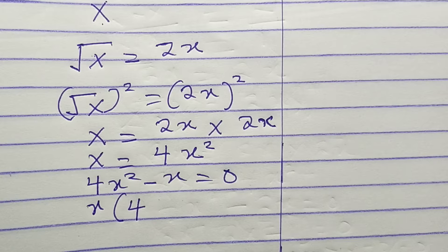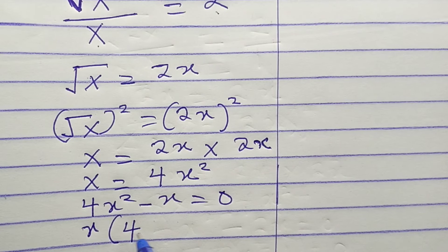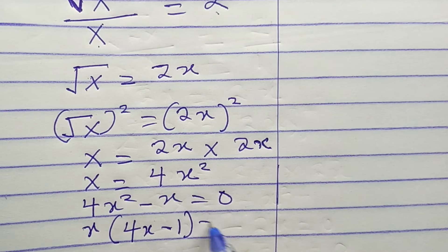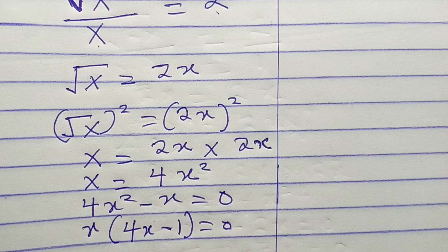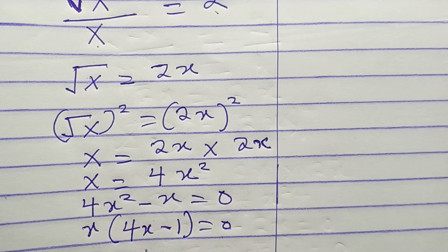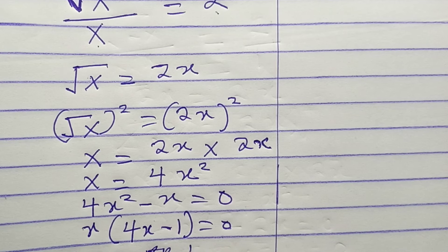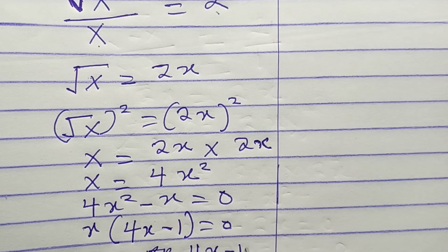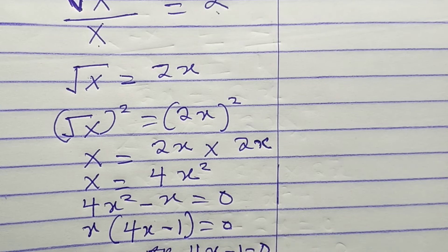4x minus 1 equals zero. So x equals zero or 4x minus 1 equals zero.